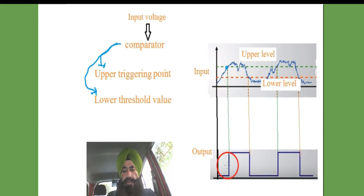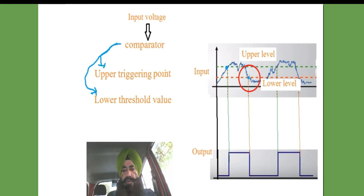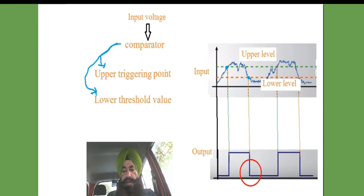The output changes from low to high value when the input reaches the upper triggering point. When it reaches the lower threshold value, it again jumps from high to the low value.